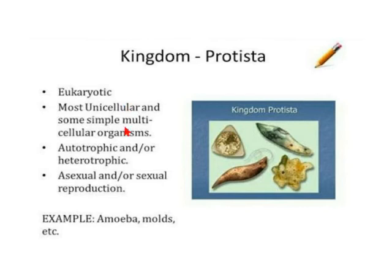Kingdom Protista organisms are eukaryotic, mostly unicellular, with some simple multicellular organisms. They can be autotrophic or heterotrophic, and both asexual and sexual reproduction are present. Some protists are plant-like and can photosynthesize, such as Euglena and Chlamydomonas, while others are animal-like and heterotrophic, such as Amoeba and Paramecium.